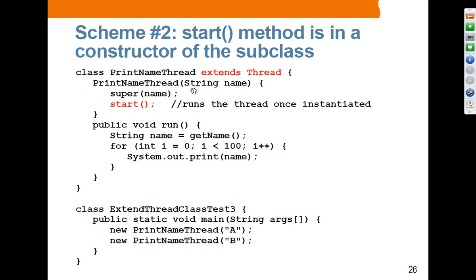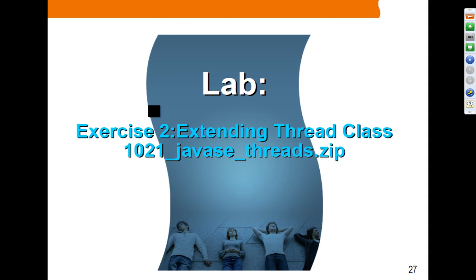Scheme two: call the start() method inside the constructor of PrintNameThread. In this case, in the main method all you have to do is create the thread object — when the constructor is invoked, it calls start() automatically, so you don't need to call start() directly.